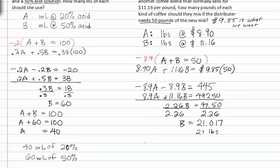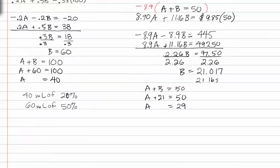If B is 21 pounds and A plus B is equal to 50, then A plus 21 is equal to 50 and A is equal to 29. This means you'll need 29 pounds at $8.90 a pound and 21 pounds at $11.16 a pound.